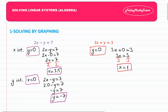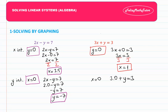For the y-intercept of the red equation, we put x equals 0: 3 times 0 plus y equals 3, giving y equals 3. This is the y-intercept.